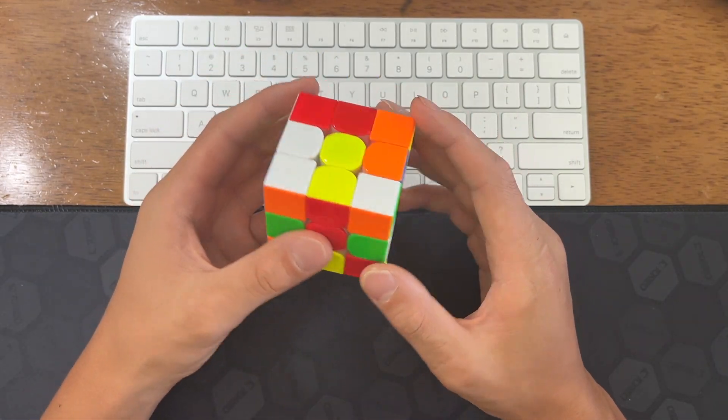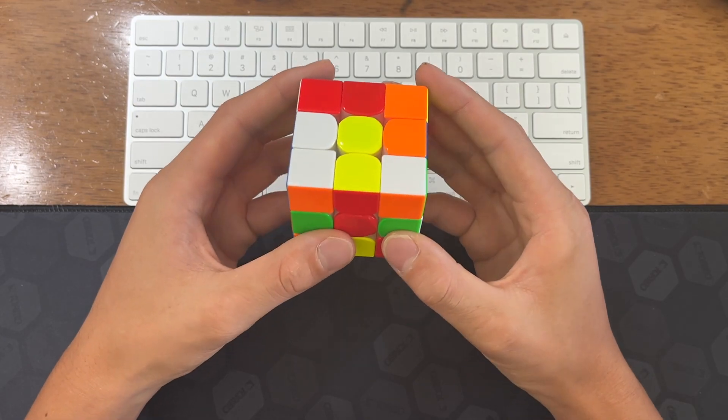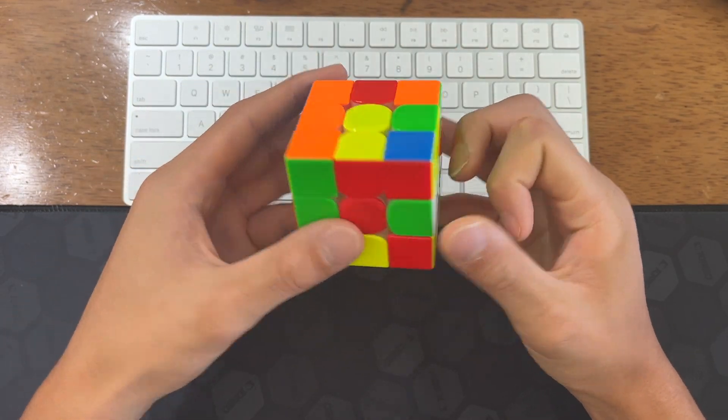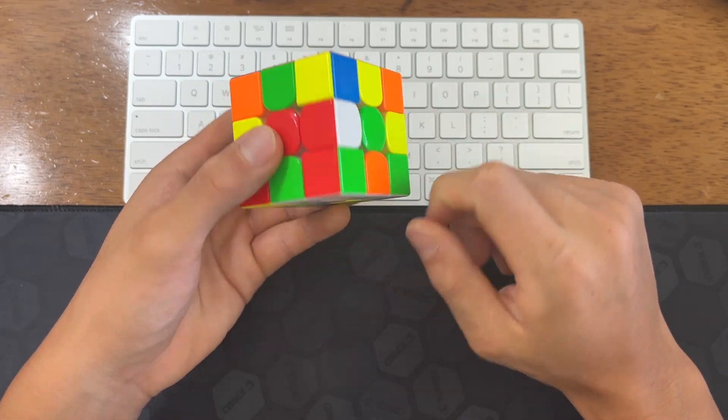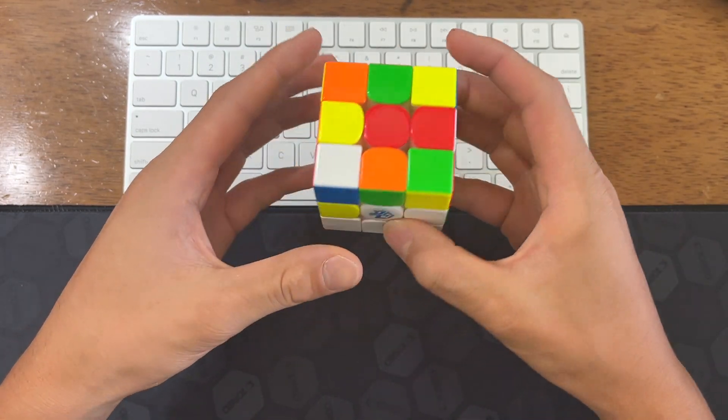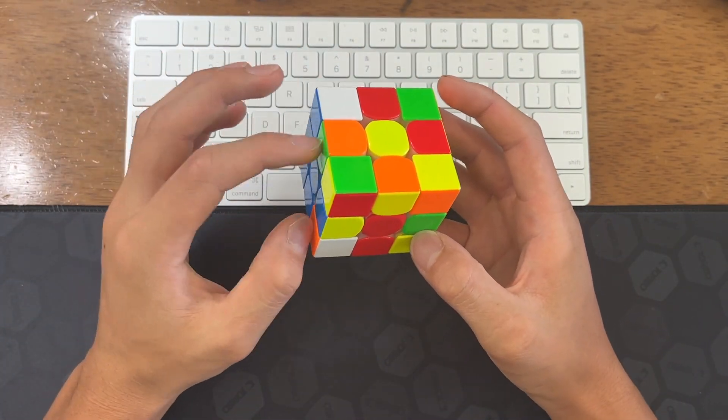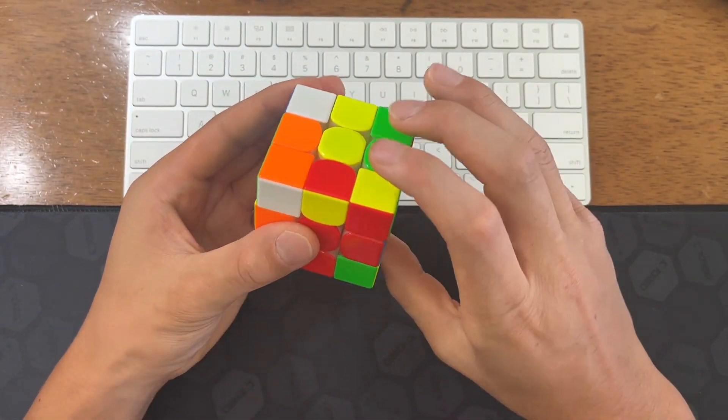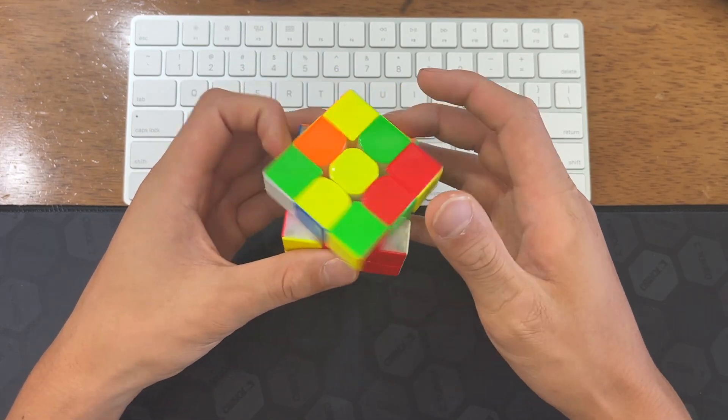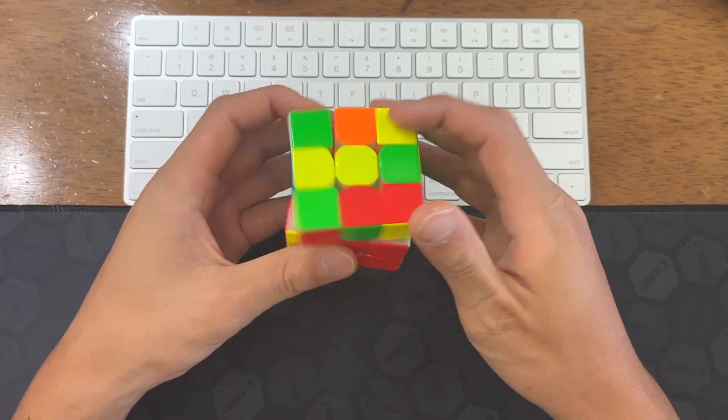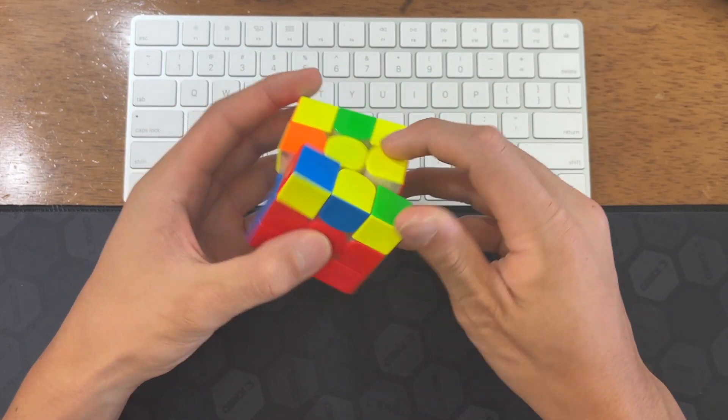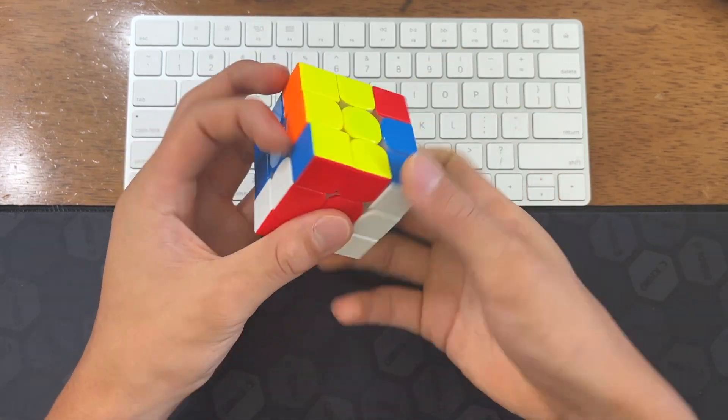So what you can do here is you can do a U2 and pair up that block and do an F R to line up those, and then a D F L' to solve the X-cross. And then easy second pair and then easy third pair as well. And then solve this pair. I don't know dot OLL, so sledgehammer, OLL, T perm.